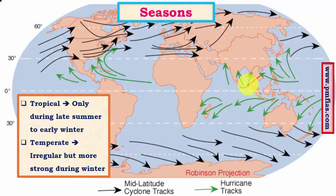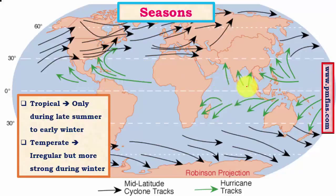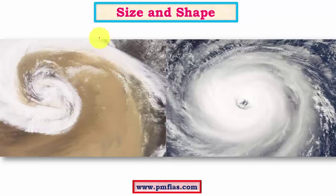Regarding the seasons of formation, tropical cyclones form in late summer. In the Indian Ocean, they typically occur from mid-September to early November; in the western Pacific, typhoons peak in August and September; hurricane season in the Atlantic is also most active in August and September. Temperate cyclones, however, form throughout the year but are most intense in winter due to greater temperature contrast, and weakest in summer.